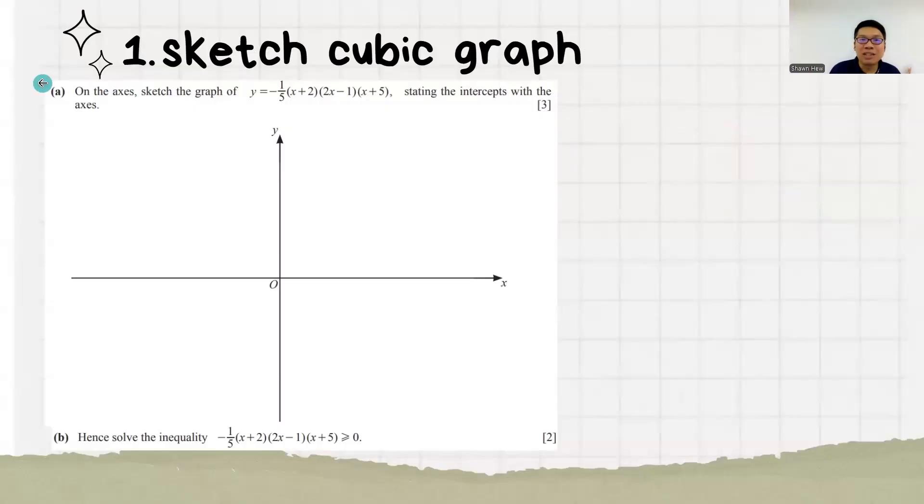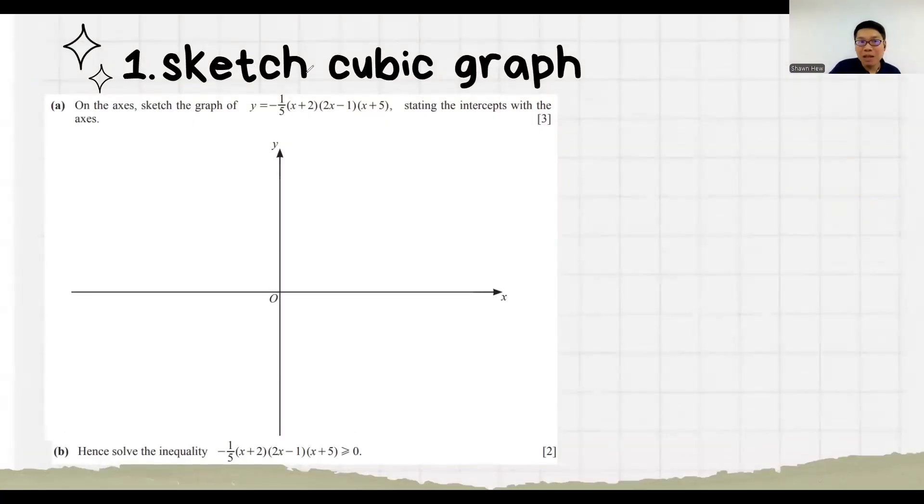First part, you need to sketch the cubic graph. So every time if they give you the equation, these three are telling you where is the x intersection. So the first x intersection is minus 2. Here is half. Here is minus 5. So after we know these 3, this minus 1 over 5 is for you to know where is the y intersection. Y intersection means x equals to 0. So y is 2.